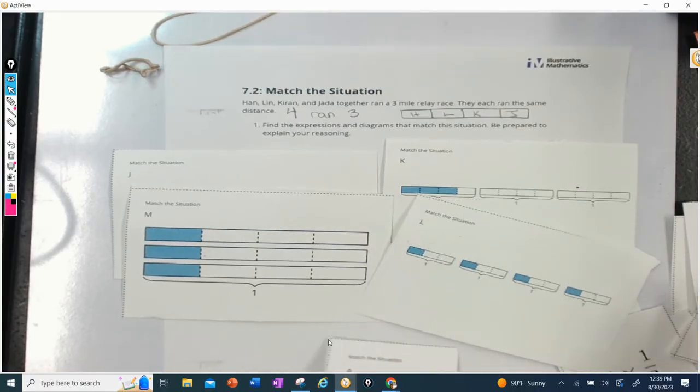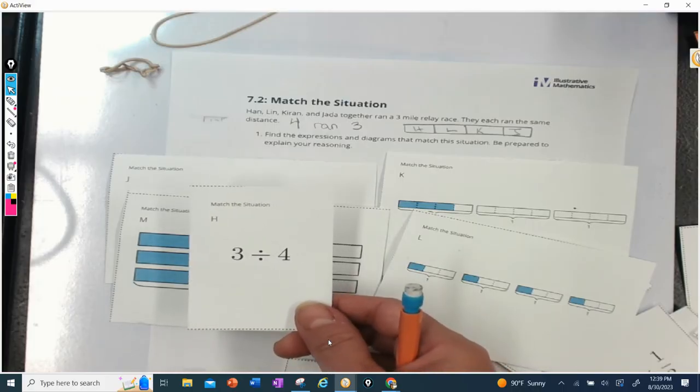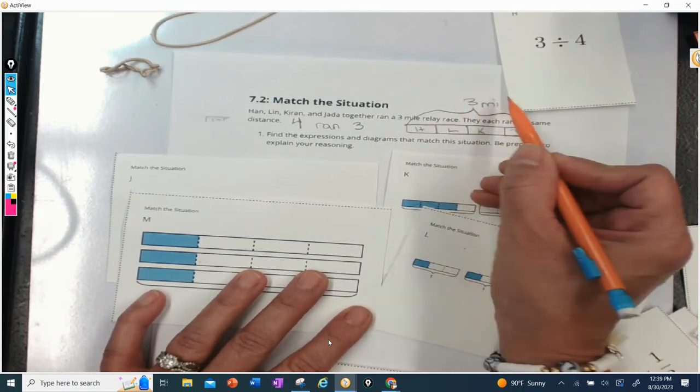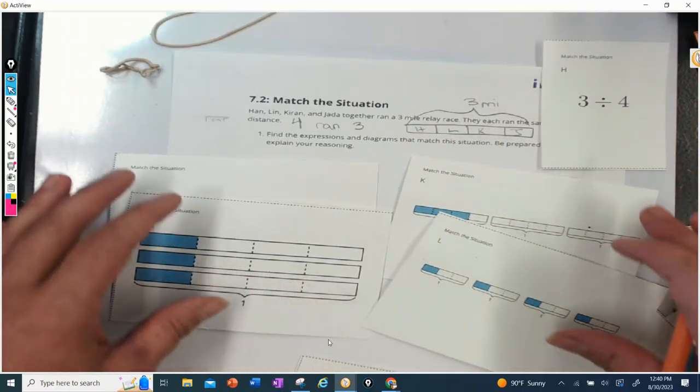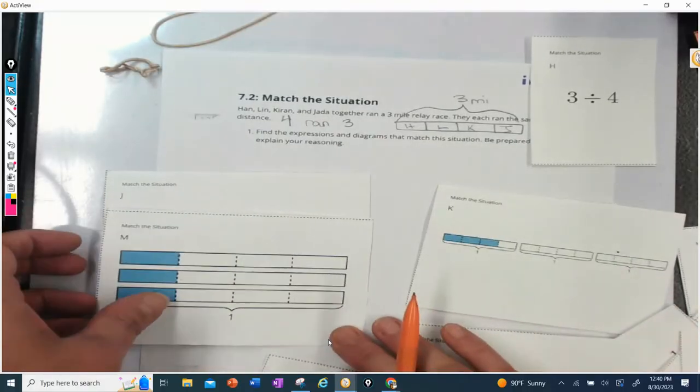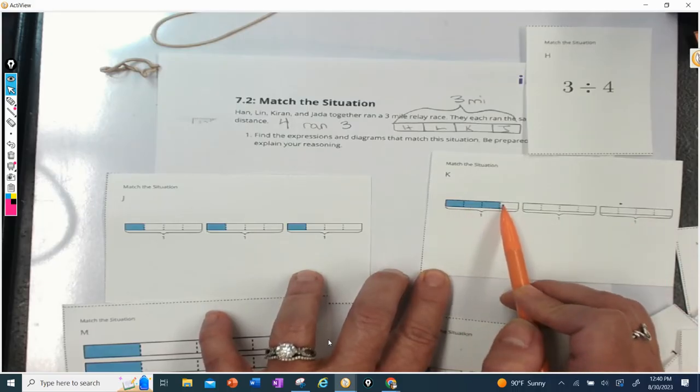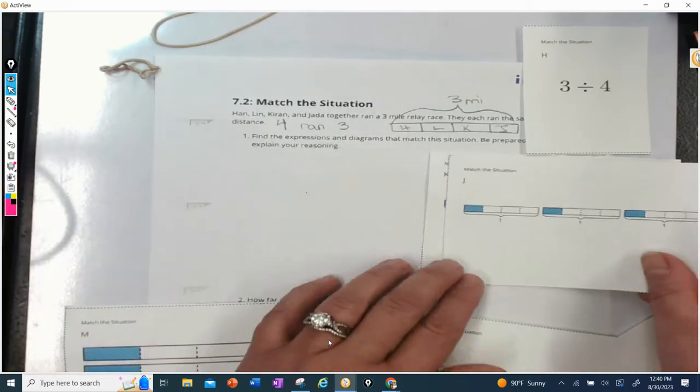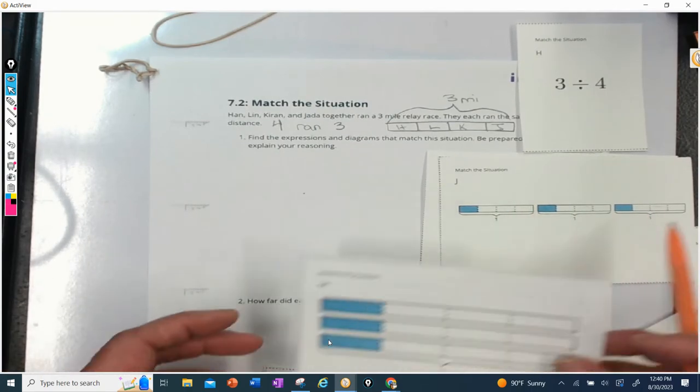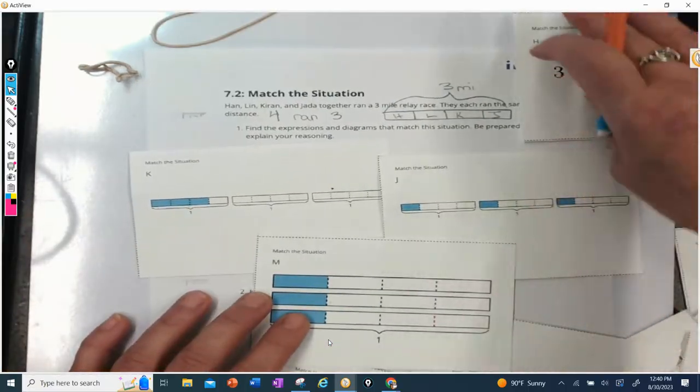This one has four with three separations, and this one has three with three separations. So if we were running three miles, and each person ran the same amount, I am thinking that H, because I'm splitting the three miles into four pieces. So I'm definitely thinking H. Is there a problem that shows three divided by four? Well, this looks like three divided into four pieces. J also looks like three, 1, 2, 3, divided into four pieces. And this looks like 1, 2, 3 divided into four pieces. So I think that these three pictures match this equation.